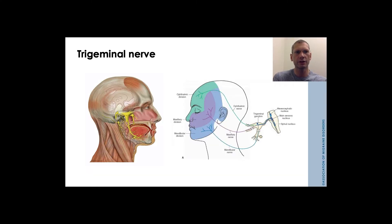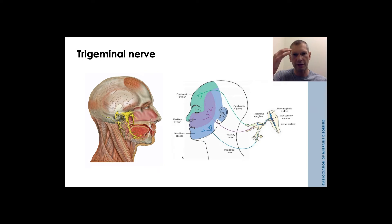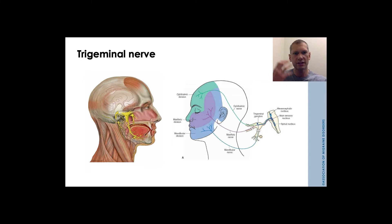We know that the trigeminal nerve is highly activated in migraine states. This is a nerve that carries sensation from the skin of our face and runs in three divisions: the ophthalmic division, the maxillary division, and the mandibular division. The trigeminal nerve is activated in migraine and also carries sensory information from the region of our paranasal sinuses and nose. So it makes sense that we might have these sensations when this nerve is activated in migraine states.